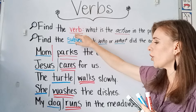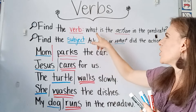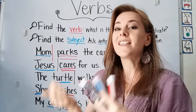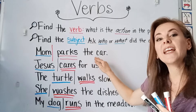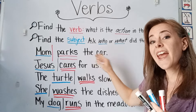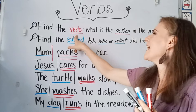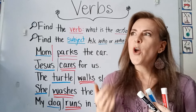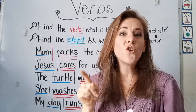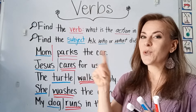So when you want to find the verb in your sentence, you ask: what is the action being done in the predicate part of my sentence? And then when you find that action, which is the verb, you ask: who or what is doing that action in the predicate? Then you will find your subject.